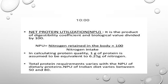Net protein utilization is the product of digestibility coefficient and biological value, divided by 100. It is also expressed as nitrogen retained in the body divided by nitrogen intake, multiplied by 100. In calculating protein quality, 1 gram of protein is assumed to be equivalent to 6.25 grams of nitrogen. Total protein requirement varies with NPU of dietary protein. The NPU of the Indian diet varies between 15 and 18.